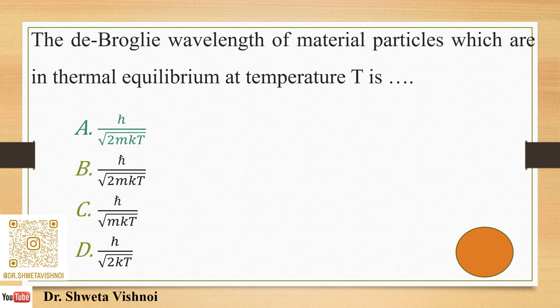It is a little confusing because you may remember the expression H upon √(3MKT). Where does the 2 come from? Lambda = H upon √(2ME), where E is kinetic energy. From here we get the 2, and the expression H upon √(3MKT) comes from a different case.